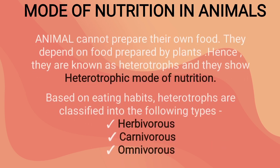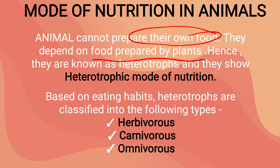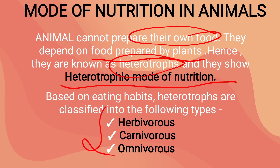Mode of nutrition in animals. We all know animals cannot prepare their own food, so they depend on others or plants for their food. Hence they are known as heterotrophs and they show heterotrophic mode of nutrition. Based on eating habits, heterotrophs are classified into the following three groups.